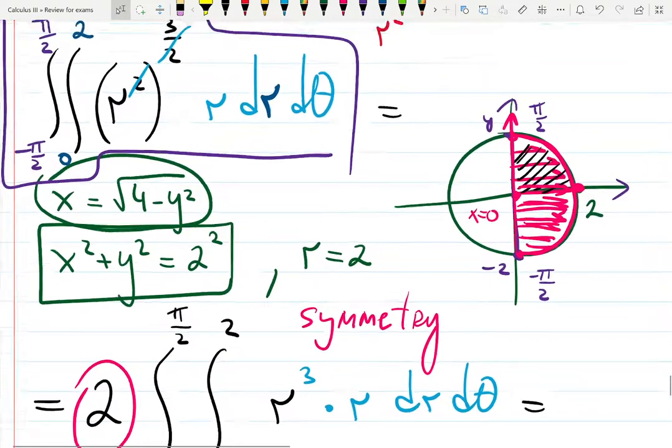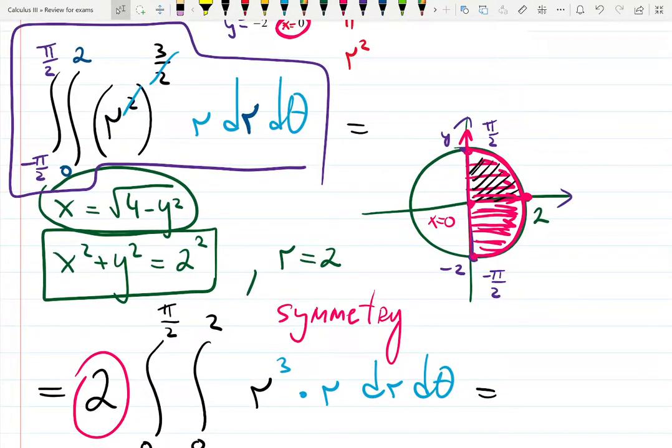R squared raised to the three halves was simplified to r cube. And then r dr d theta is part of the formula and doubled due to the symmetry. Originally we had from minus pi over 2 to pi over 2. Good job if you understand this, or slow down and think about it to make it better. See you next time.